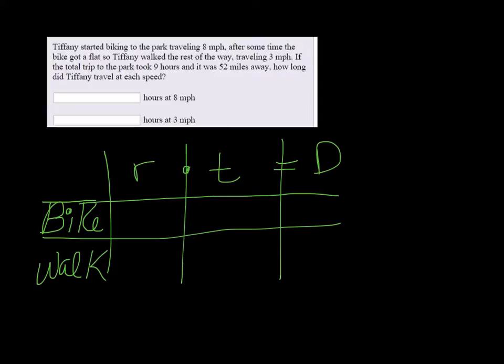It tells us that she was doing eight miles per hour on her bike for some time, we're not sure how long, and then when she was walking she was doing three miles per hour.